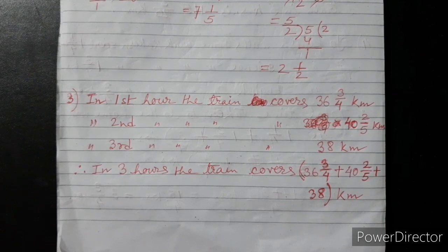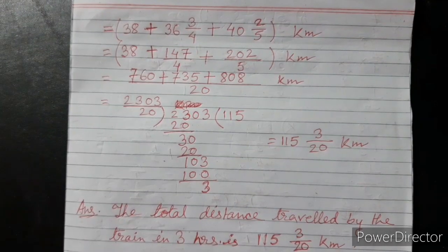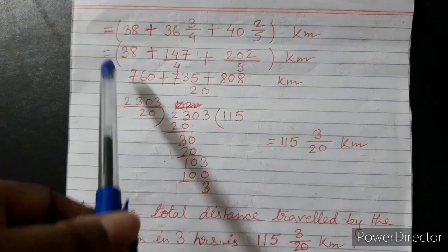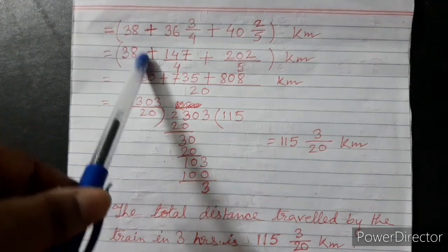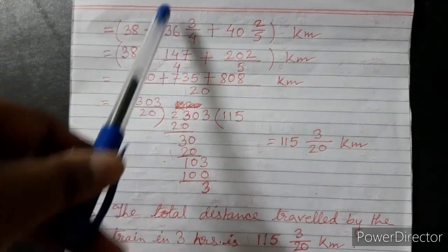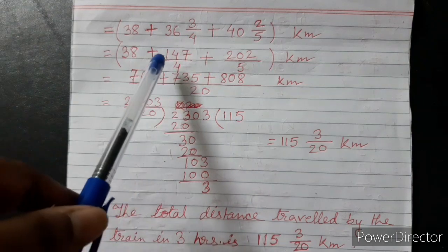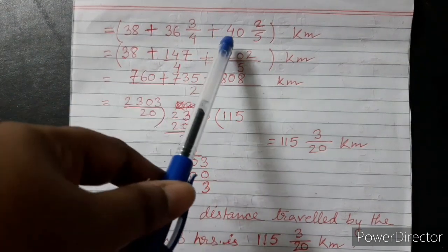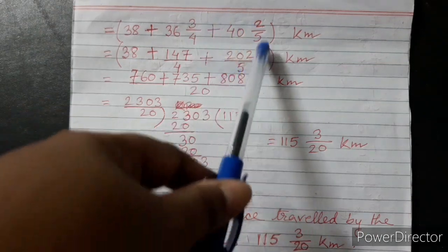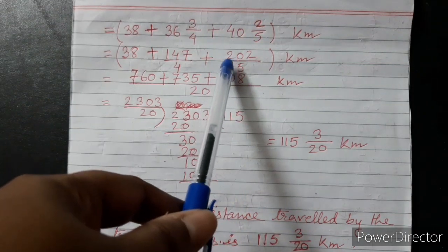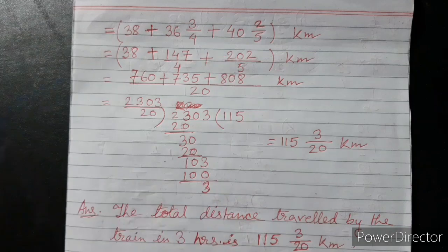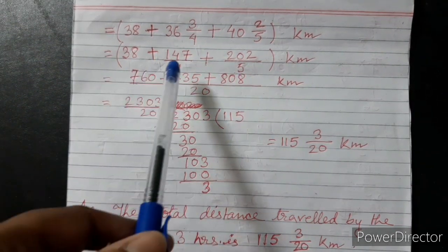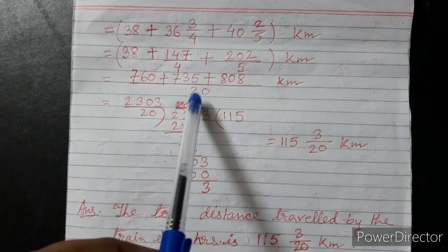Ab addition karna hai. So, 38 plus mix fraction ko improper fraction mein convert kiya, toh aya 147 by 4. 42 and 2/5 ko improper mein convert kiya, toh aya 202 by 5. Ab LCM karna hai 4 aur 5 ka — LCM hai 20.